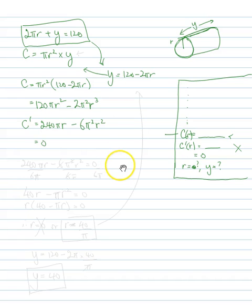Now we're going to set that to zero. So what have we got? 240πr - 6π²r² = 0. What can we do? Divide both sides by 6π. So π is cancelled there, that becomes 40r, 6 in one of the π's, so we get 40r - πr² = 0.